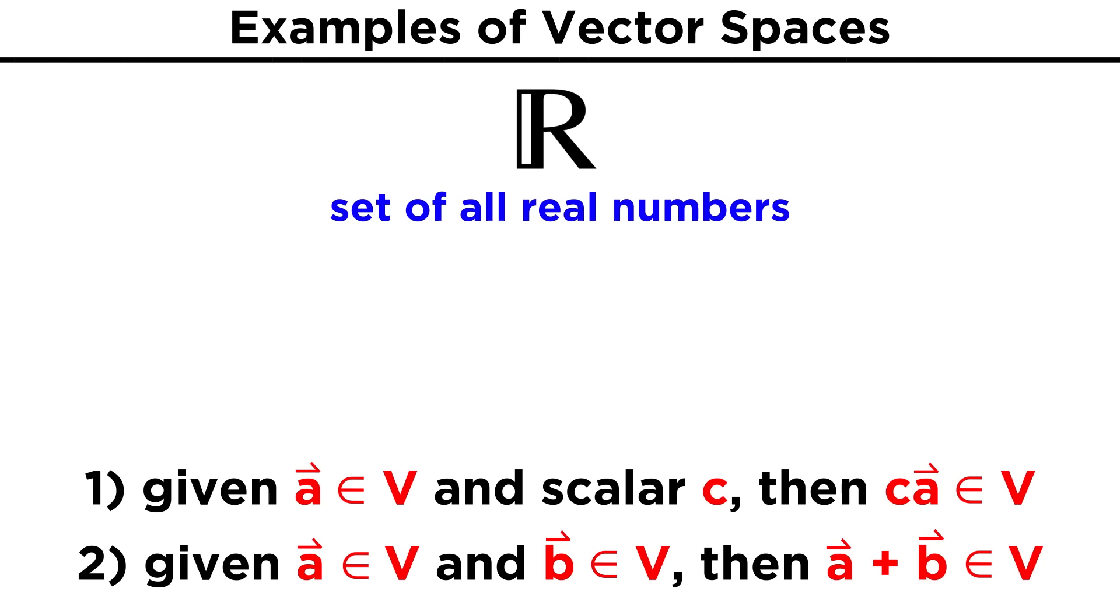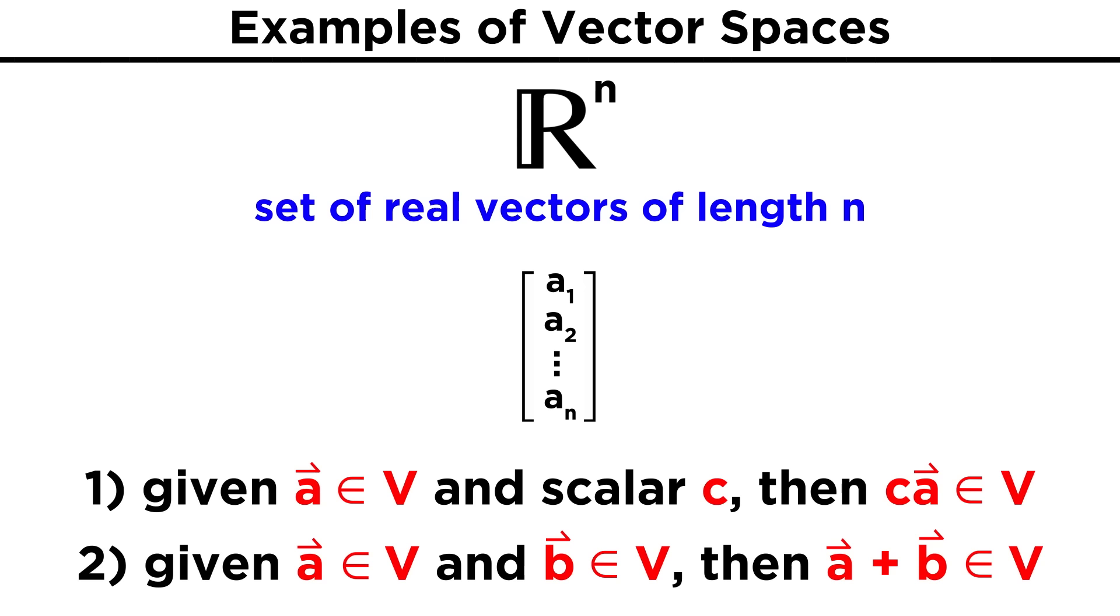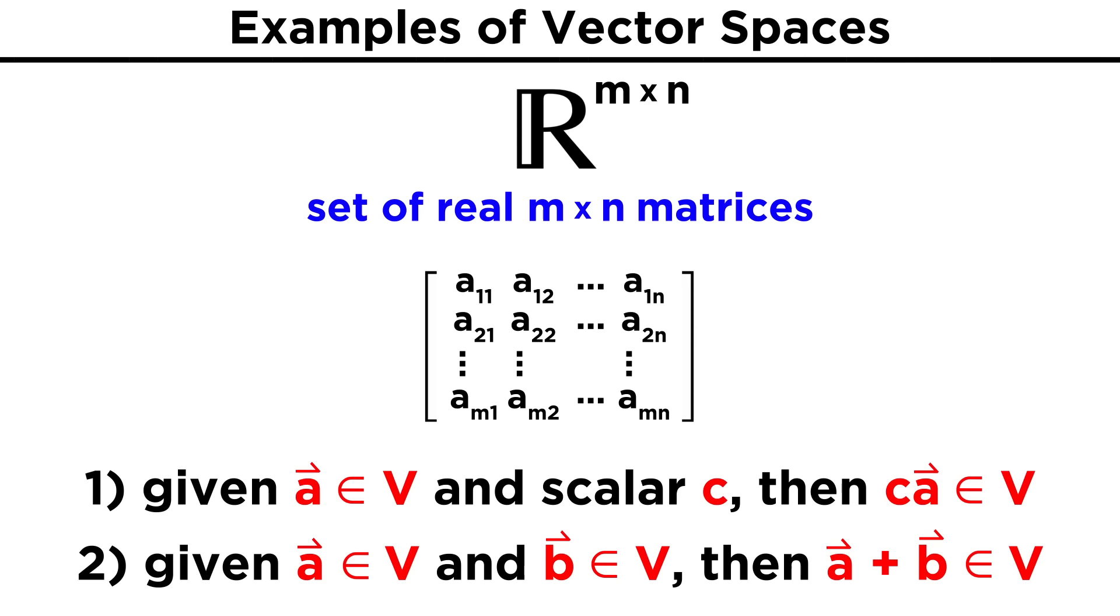Moving to another example, let's expand on our notation. If R is the set of real numbers, R^n is the set of real vectors with a length of some integer n. Similarly, R^(m by n) is the set of real m by n matrices.